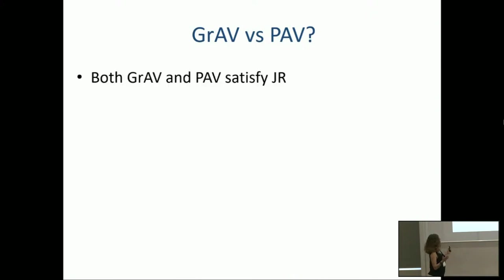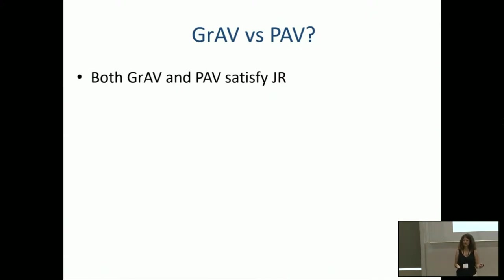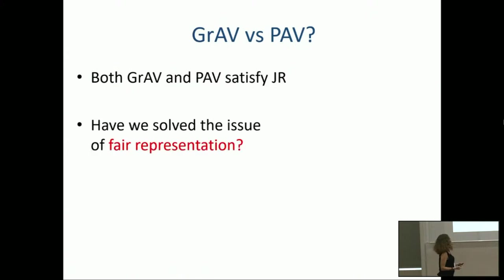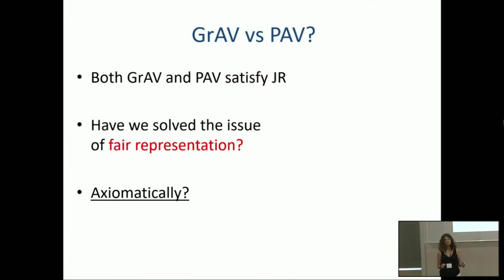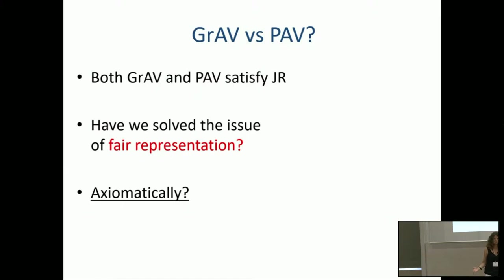Does it seem like a good place to finish the talk? I gave you two voting rules that satisfy the JR axiom. Why are we not done? Have we solved the issue of fair representation? Two questions to ask: Is justified representation really the right axiom to capture proportionality, or do we want something stronger? And, remembering I'm a computer scientist — do these provide satisfactory solutions algorithmically?